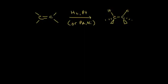To hydrogenate an alkene, you need hydrogen gas and a metal catalyst, something like platinum or palladium or nickel. And there are many others, but these are the ones most commonly used.